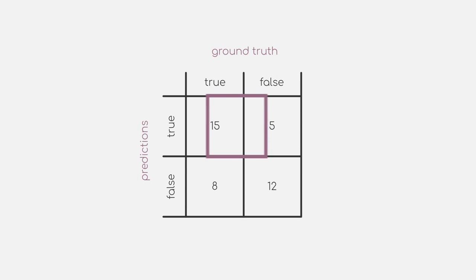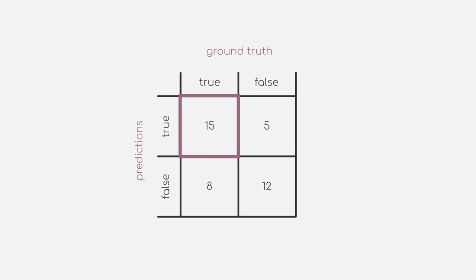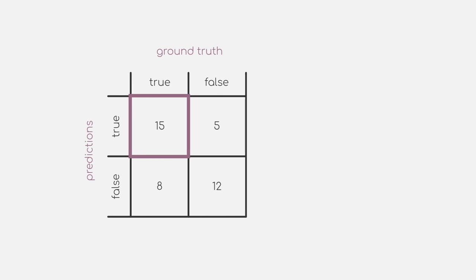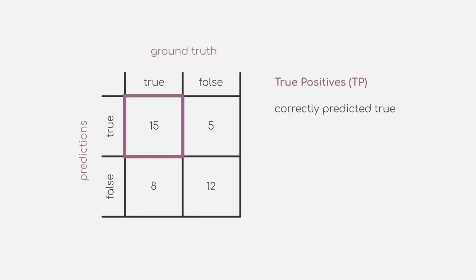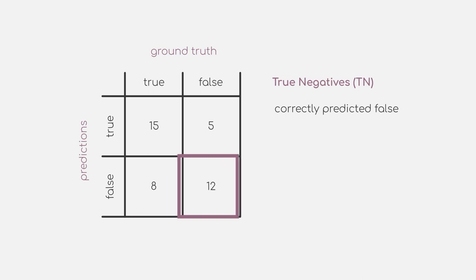The best case scenario for our model will be our top left quadrant, where we correctly predict that the patient has a positive diagnosis. We call those samples true positives, as we predicted positive and this is also true in our ground truth. The same goes for the opposite, where we correctly classify that a patient does not have the disease — we call those cases true negatives.